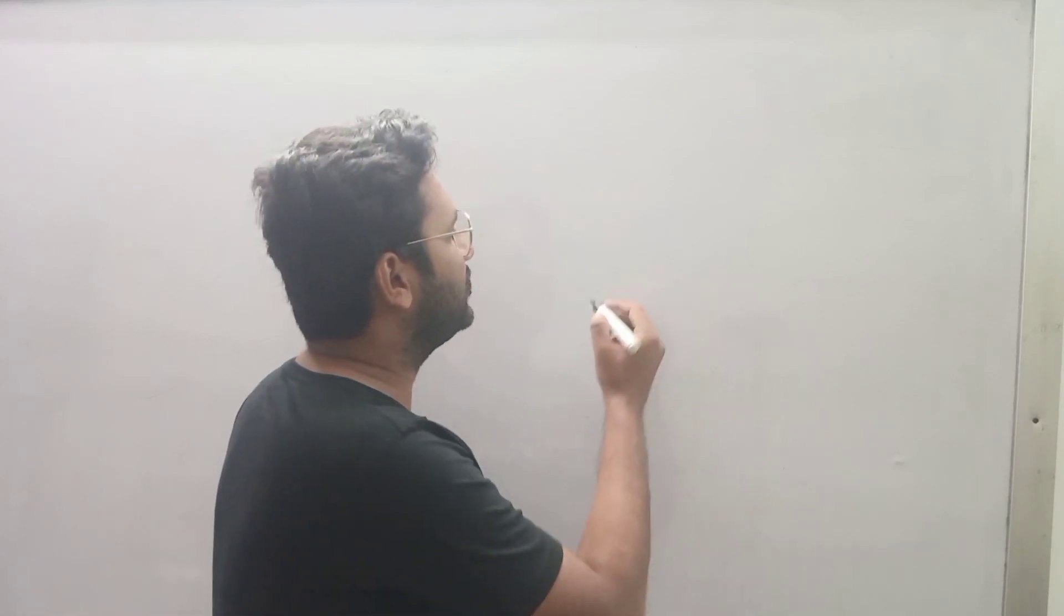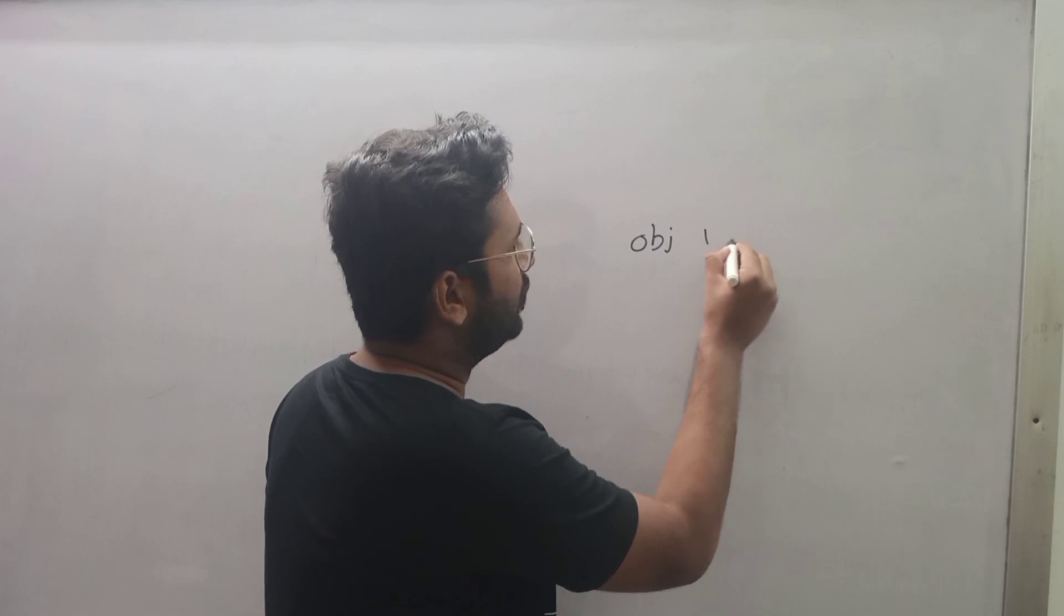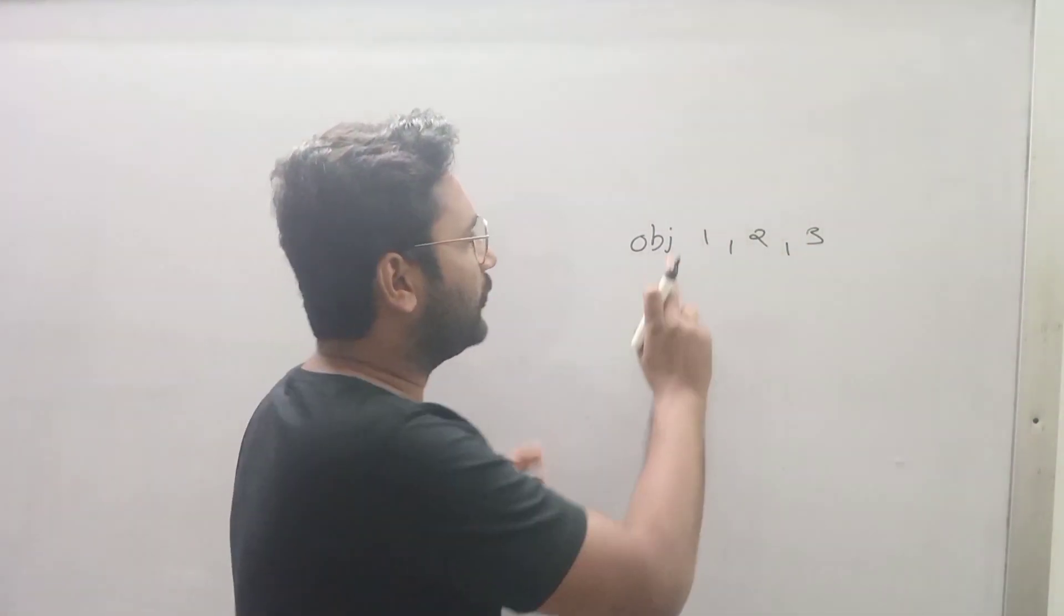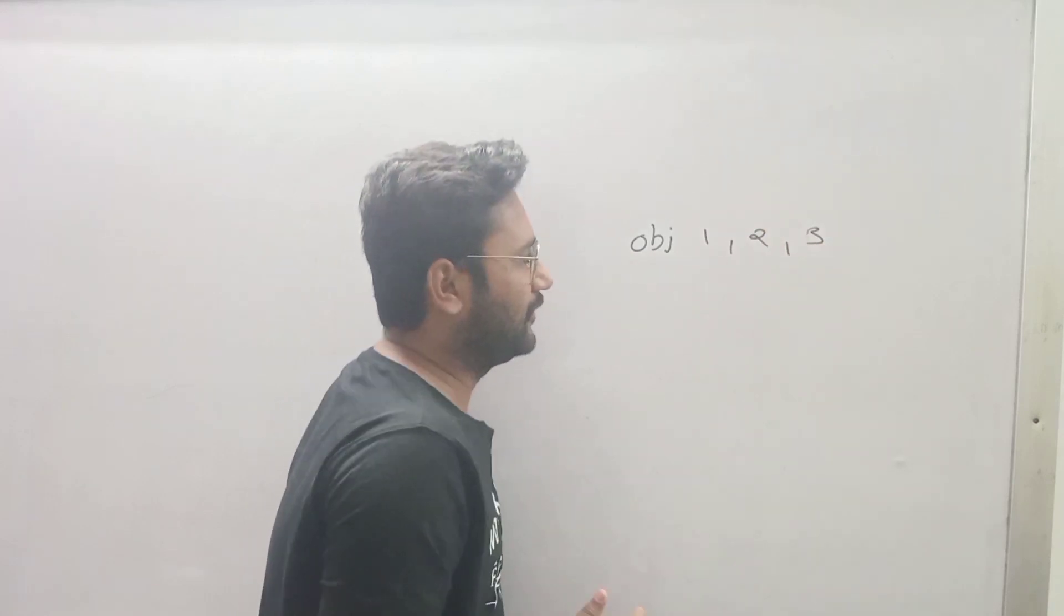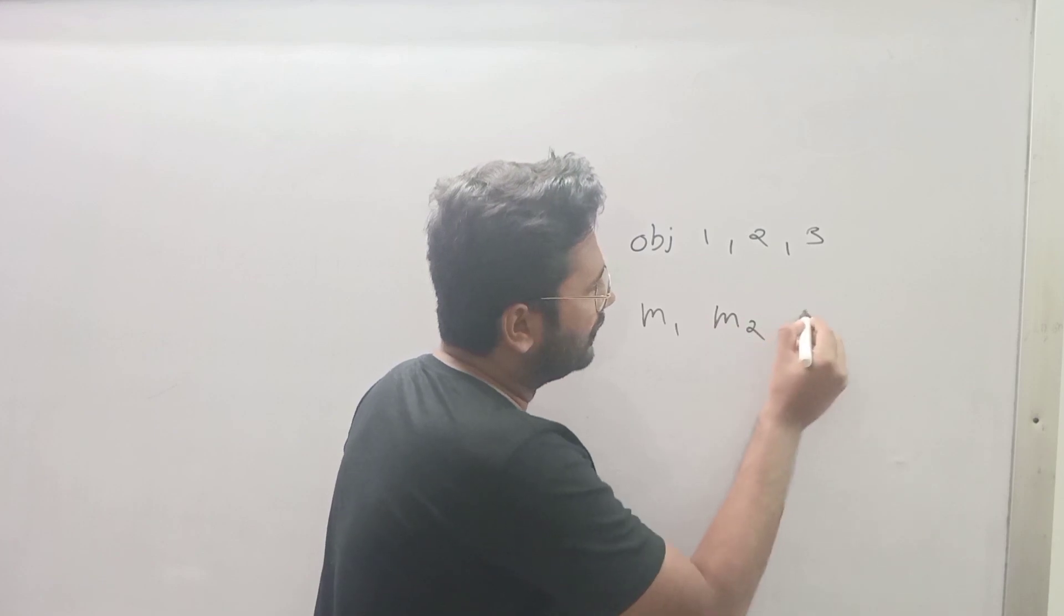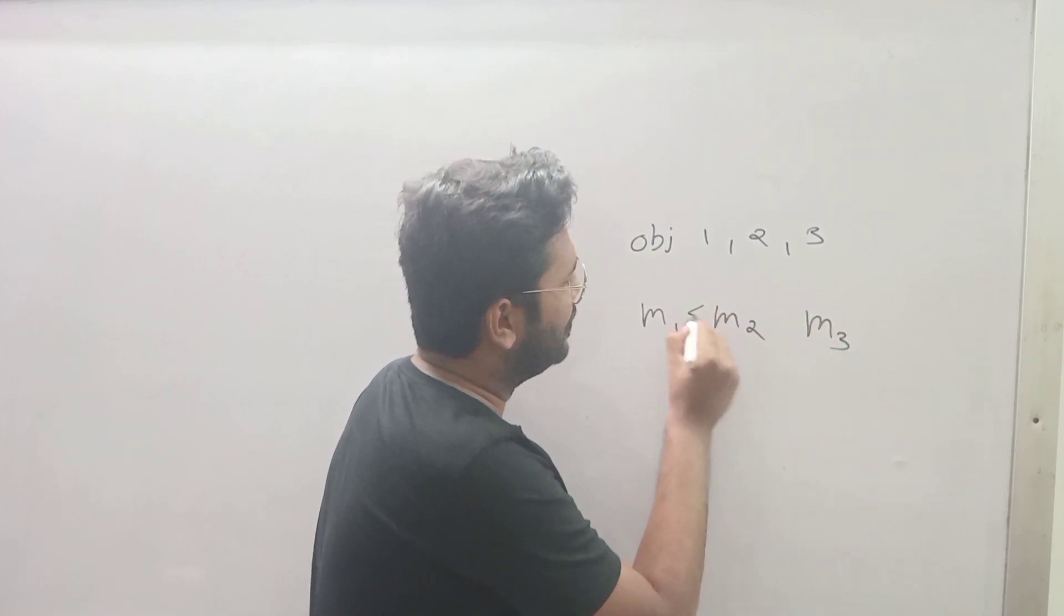Now suppose we have three objects: object number one, two, and three. We are naming them object 1, object 2, and object 3. They have mass m1, m2, and m3.